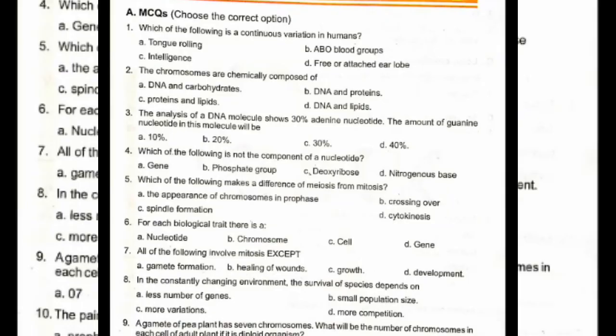Unit 3: Variation, Heredity and Cell Division. Which of the following is a continuous variation in humans? Option C: Intelligence. The chromosomes are chemically composed of DNA and protein. Option B.